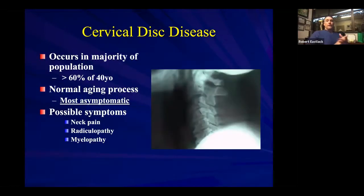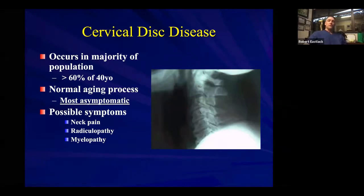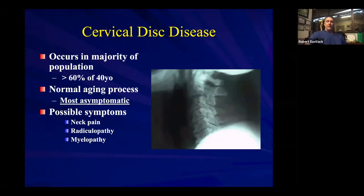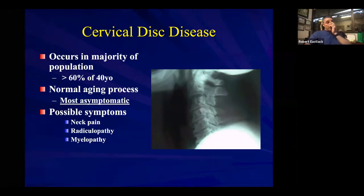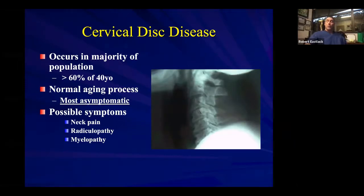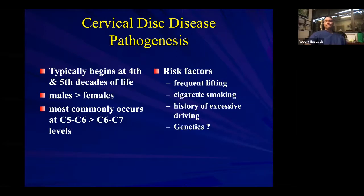Disc disease is pretty common in the cervical spine — greater than 60 percent of 40-year-olds will have some form of it, so it's really considered a normal aging process. Most of the time it's asymptomatic. All of our patients want to know what traumatic event led to their demise in their spine, but the reality is it was genetic and age-related decline. Variants in presentation exist: some people have neck pain, some just have radiculopathy, some have myelopathy, which can be quite silent with no pain.